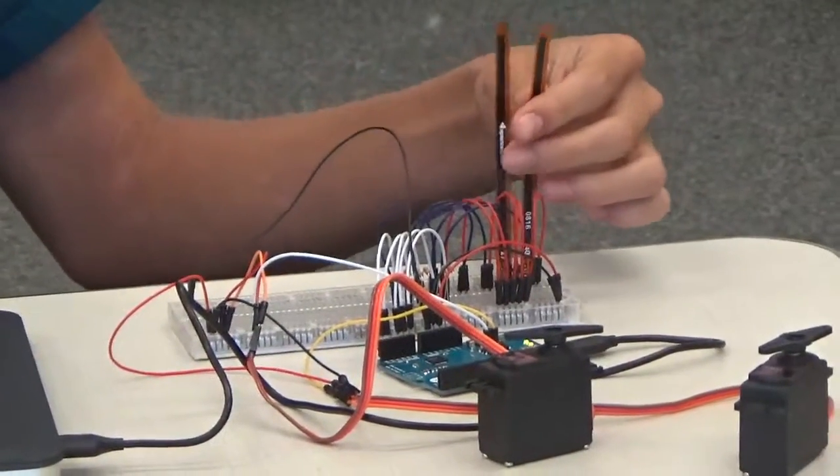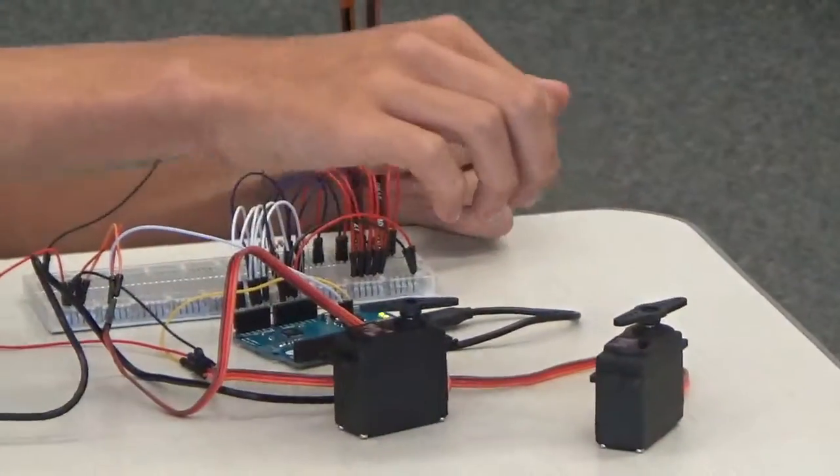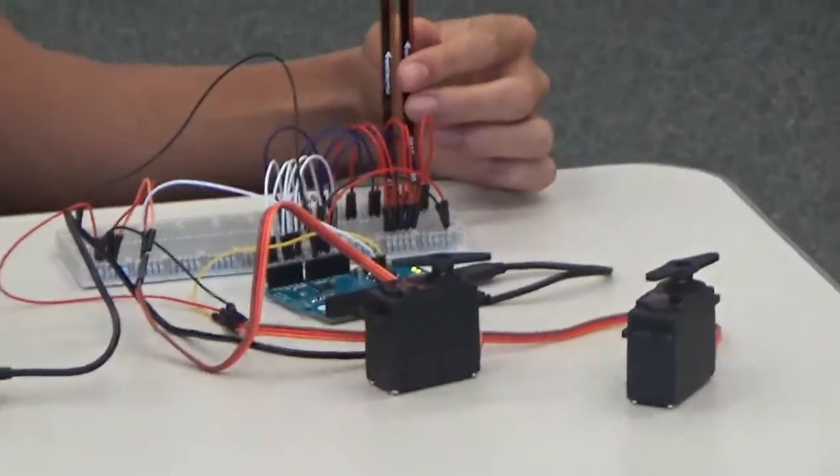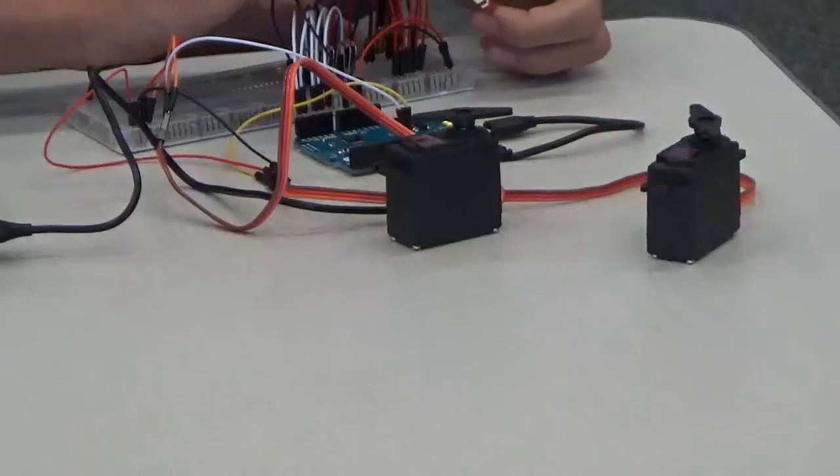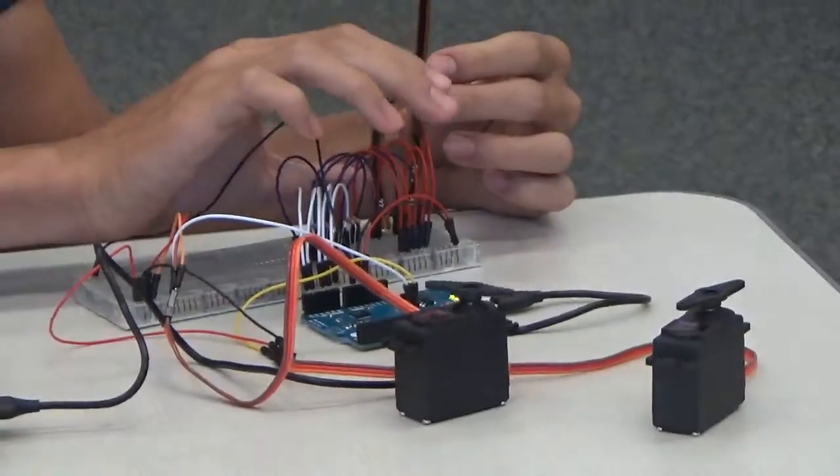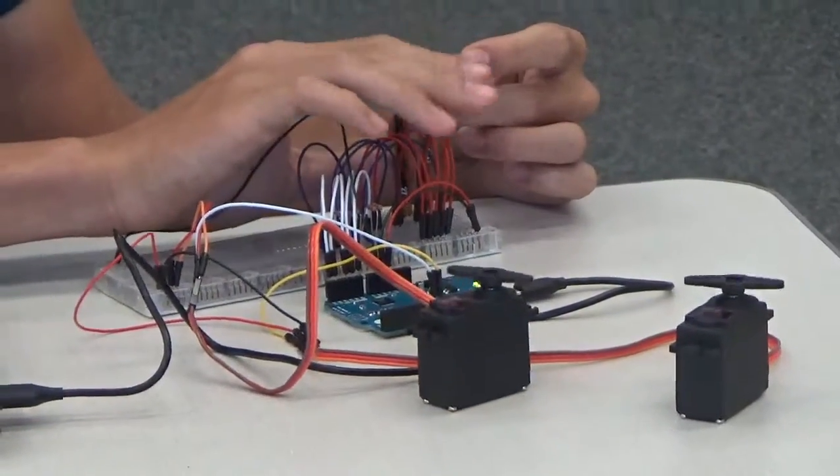Each individual flex sensor will dictate what angle the servo is at. So if I bend one of the sensors, one of the servos moves all the way. If I bend the other, same thing. They work together.